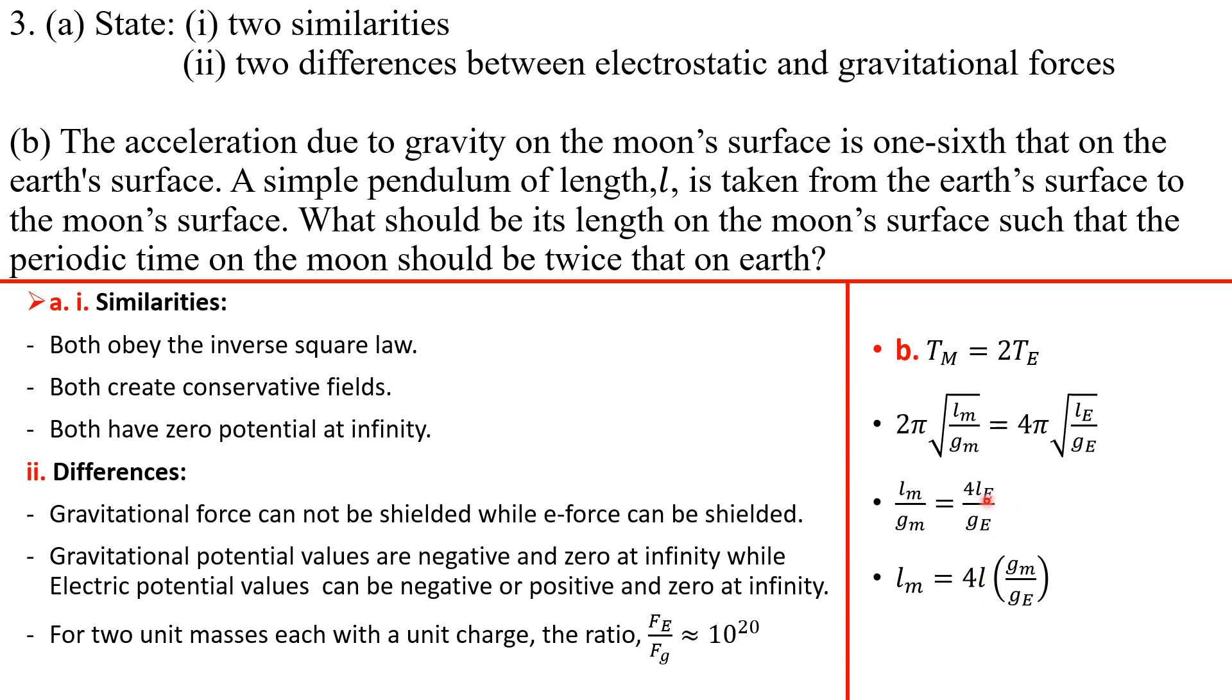Because the length on the earth's surface is l, remember that. So you're taking it now to the moon. So we have 4l gm/ge. But remember that gm/ge basically gives you one over six, right? Yes, because the field on the surface of the moon is one-sixth that on the earth's surface. So this is basically 1/6. So divided by 4l, you have 2/3 l. So that's the length of the simple pendulum on the moon's surface such that the periodic time is two times that on the earth.